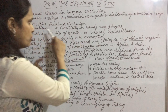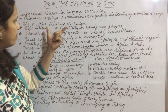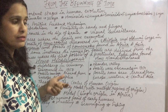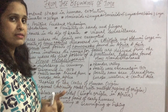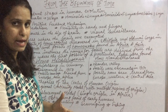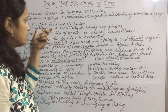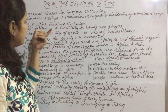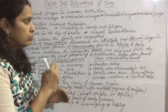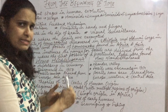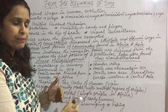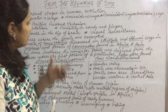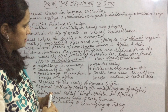Some of the features are: first, bipedalism. As its name suggests, human beings started walking on two legs. Bipedalism helped them put less energy into hunting and running.